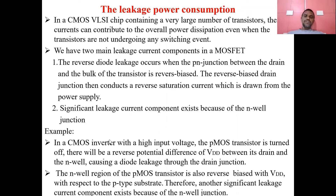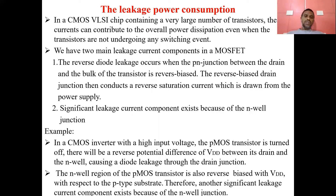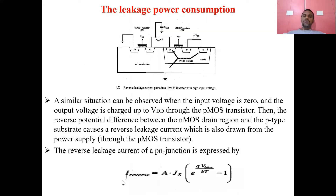Consider an example of a CMOS inverter. With a high input voltage, the P-MOS transistor is turned off; there will be a reverse potential difference of VDD between its drain and the N-well, causing diode leakage current. Also, the N-well region of the P-MOS transistor is reverse biased with VDD with respect to the P-substrate, so another significant leakage current component exists due to the N-well junction.